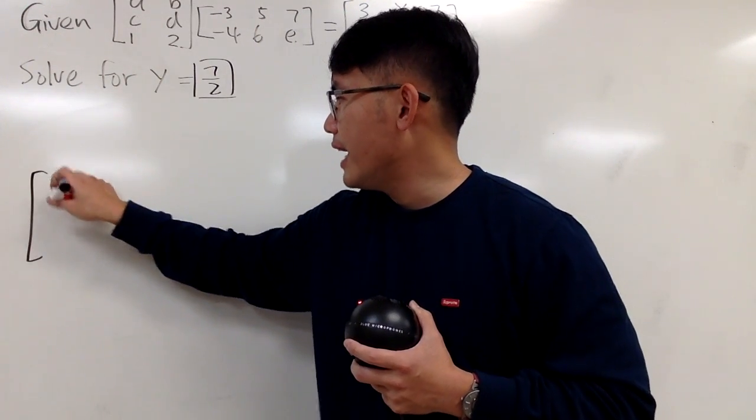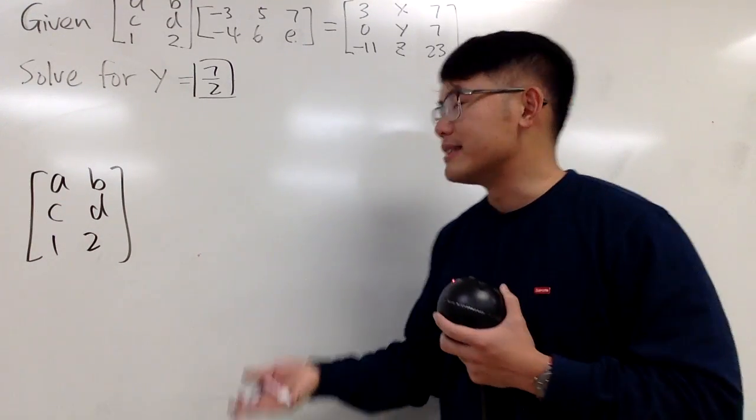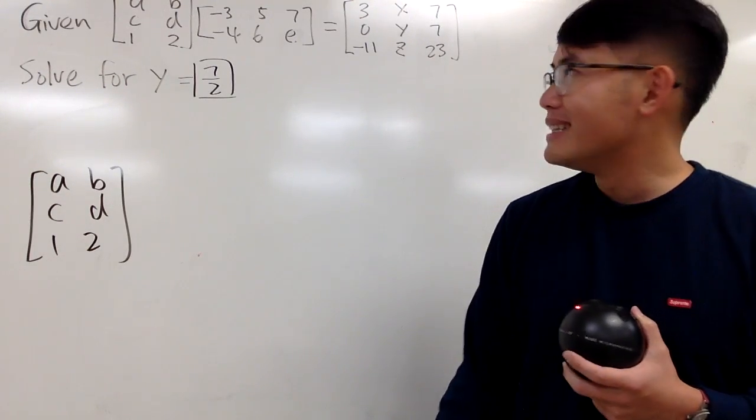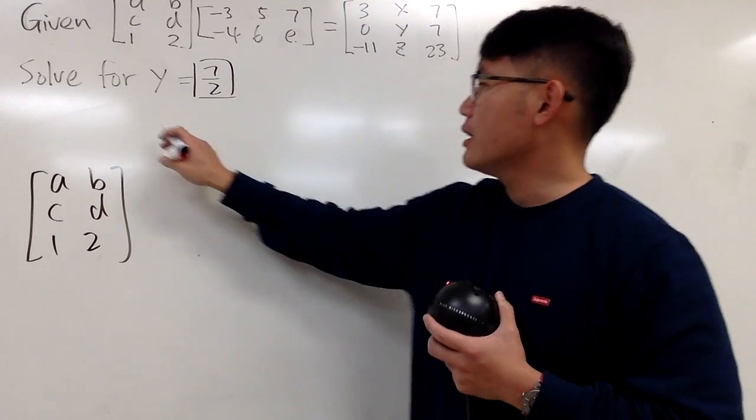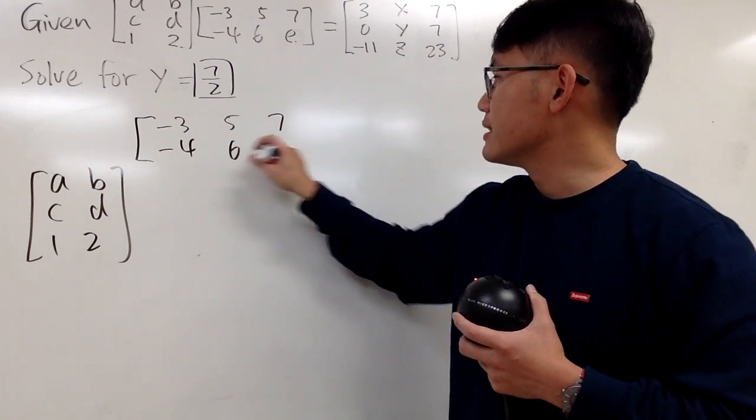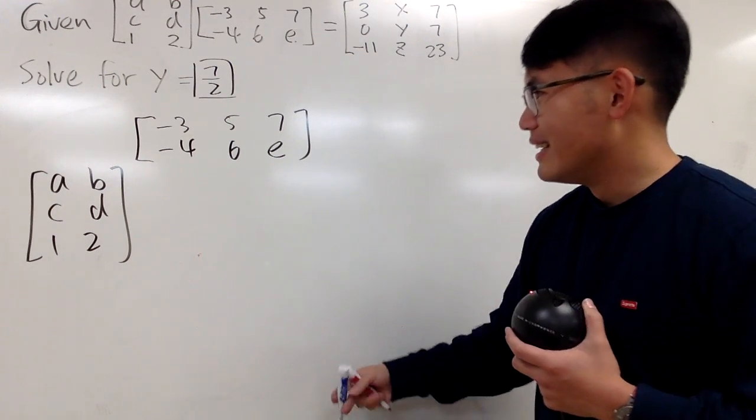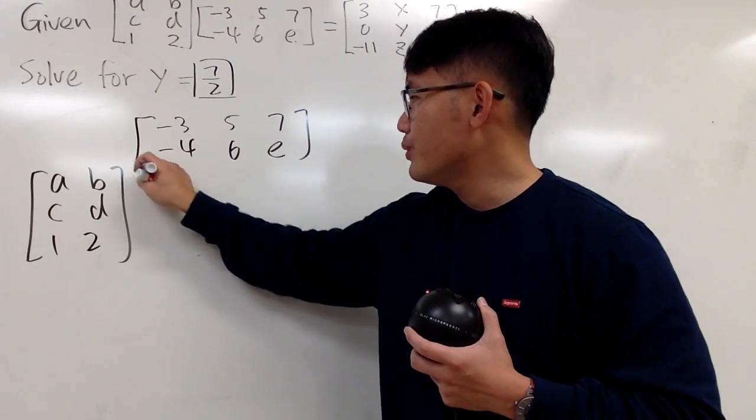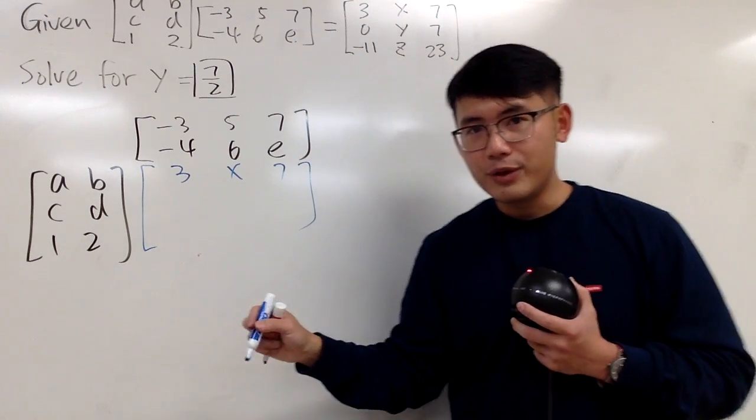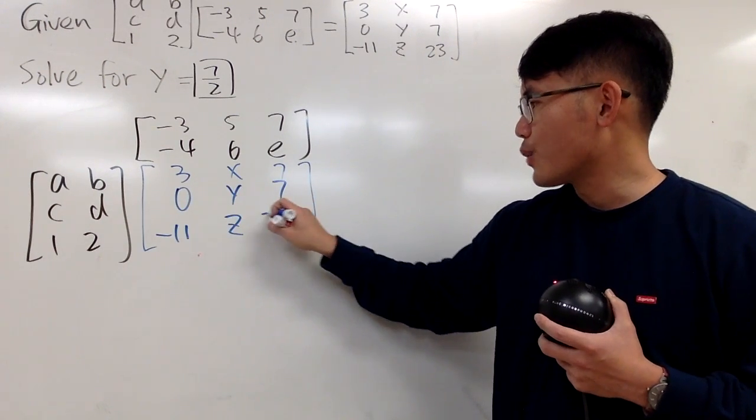I will put this down right here. We have A, B, C, D, 1, 2. And you guys know the hardest part of the linear algebra is that you have to make sure you copy down all the numbers correctly, and also the computations. All right, now, for this one, I will put it on the top right here, and just write it down, negative 3, 5, 7, and then negative 4, 6, and E. And then, I will put the answer right here. You'll see, it's actually really nice. When you have a 3x2 times a 2x3, you do end up with a 3x3. And let me just copy this down first. We have 3x7, and then we have 0y7, and then negative 11, 3, and 23.